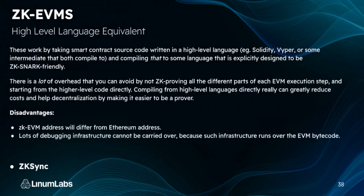You also get high-level language equivalent ZK-EVMs. These work by taking smart contract source code written in a high-level language like Solidity or Vyper and compiling it to a language explicitly designed to be ZK-friendly. There's a lot of overhead you can avoid by not ZK-proving all parts of the EVM execution step and starting from higher level code directly. However, the ZK-EVM address will differ from the Ethereum address and there will be lots of debugging infrastructure that cannot be carried over. A notable example is ZK-Sync.